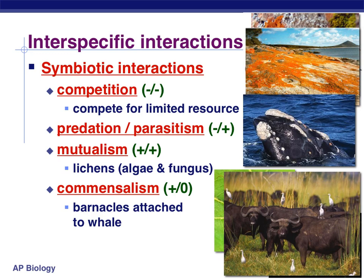Now we get into symbiotic relationships — how organisms interact with each other. There's competition, where two or more things compete for a limited resource. There's predation, where one animal kills another for food. There's parasitism, where one animal uses another as a host — it doesn't intend to kill the animal, though sometimes it does, but that's not the goal. There's mutualism, where both organisms benefit from the relationship. And there's commensalism, where one organism benefits and the other is neither harmed nor helped — it's just there, no big deal.